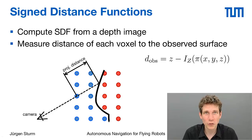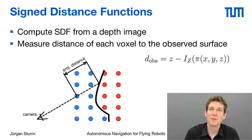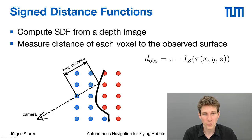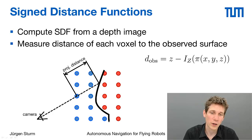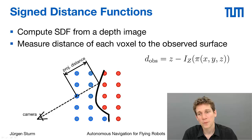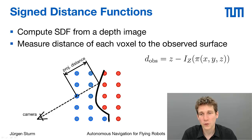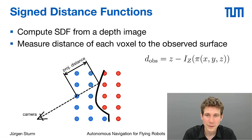The next step is computing the signed distance function from depth images. For every cell we have to estimate its distance to the surface. Computing the Euclidean distance is rather involved computationally, but a simple approximation is the projective distance: you project each cell into the camera view, look up the depth value observed at that point, and take the difference. This is not the same as Euclidean distance but it's good enough, at least if the opening angle is narrow enough.